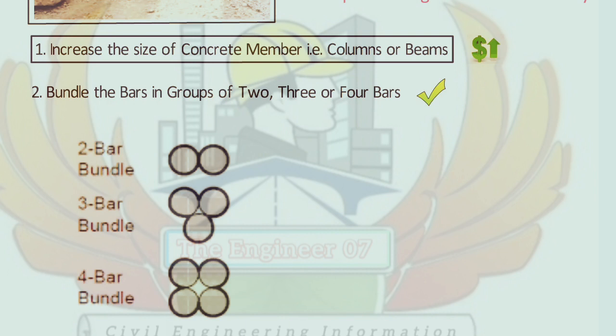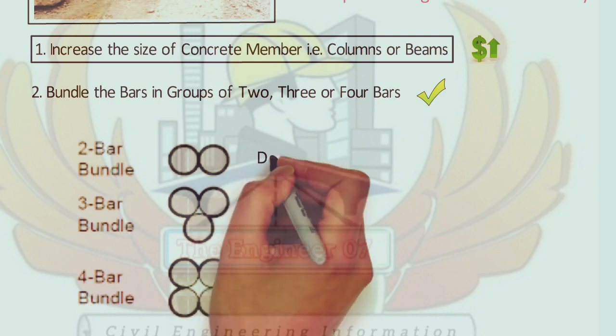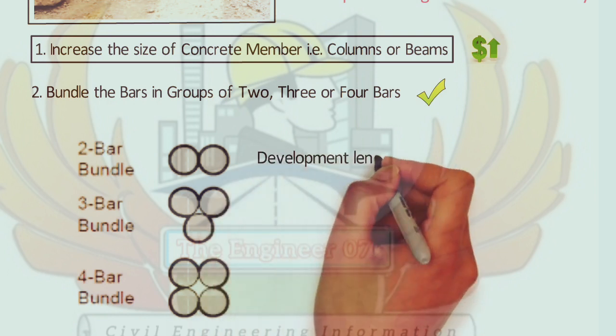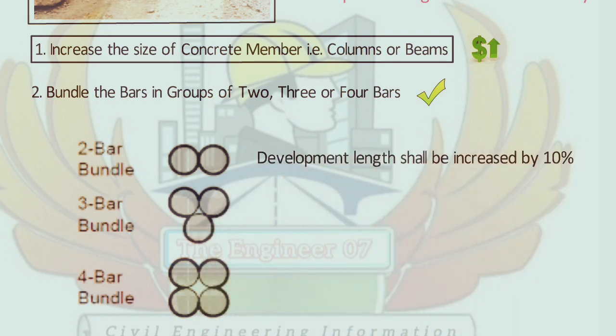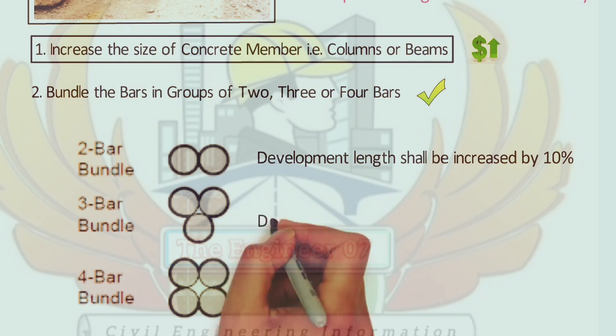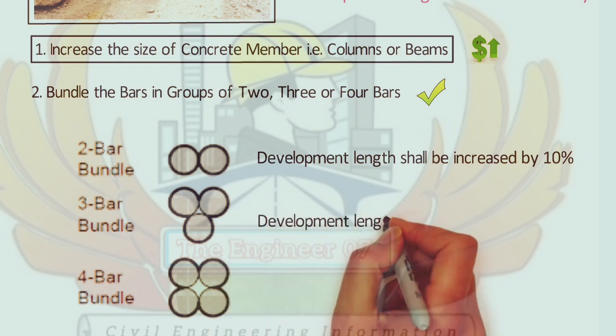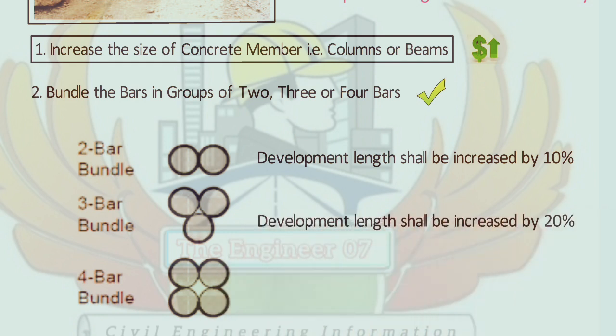If 2 bars are bundled, the development length shall be increased by 10%. If 3 bars are bundled, the development length shall be increased by 20%.